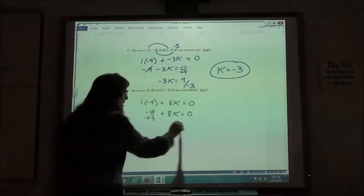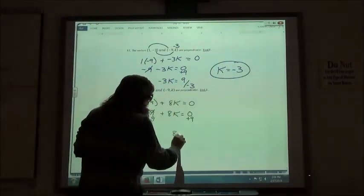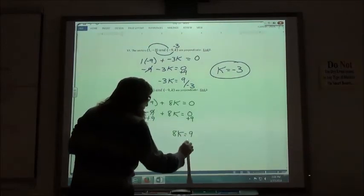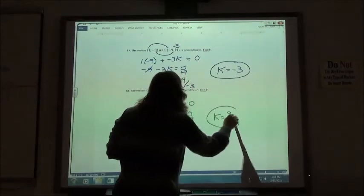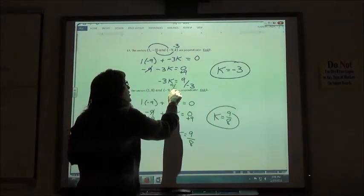I have to add my 9. So 8k equals 9. Divide by my 8. So k would be 9 eighths. Got a fraction on that one.